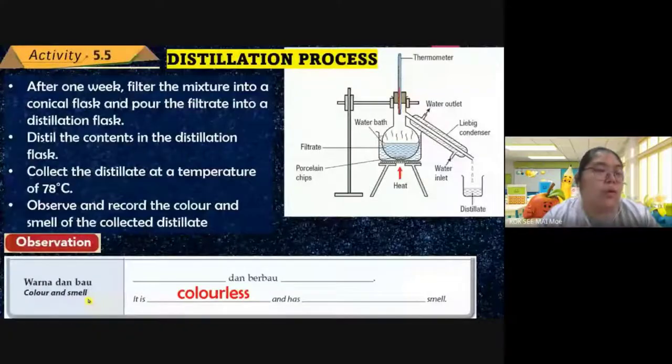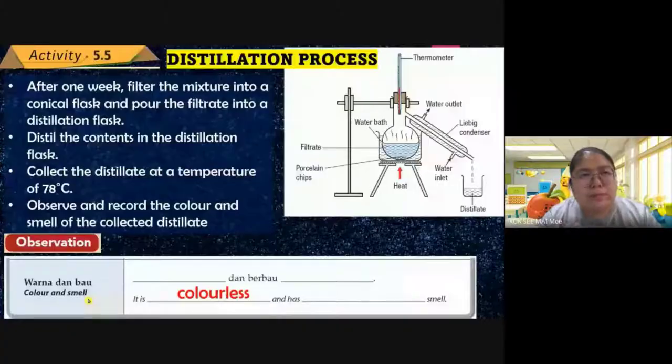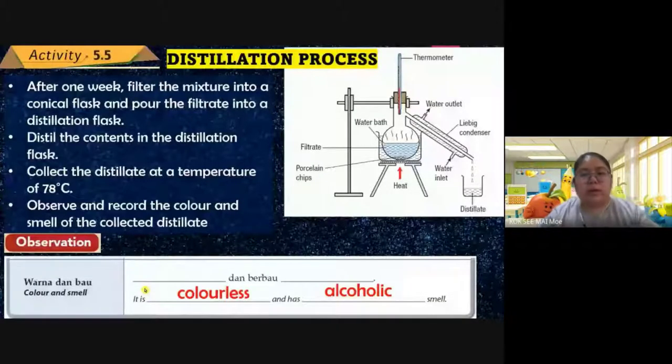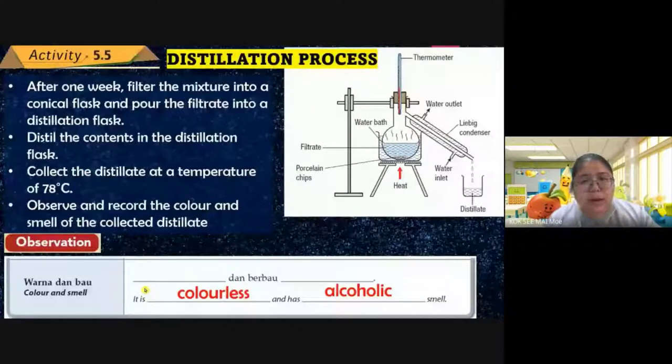The alcoholic smell means it has an alcohol odor — very strong. So this is how to produce alcohol: through fermentation and then distillation. Finally they produce ethanol and carbon dioxide, and after distillation the pure alcohol is colorless with an alcoholic smell.